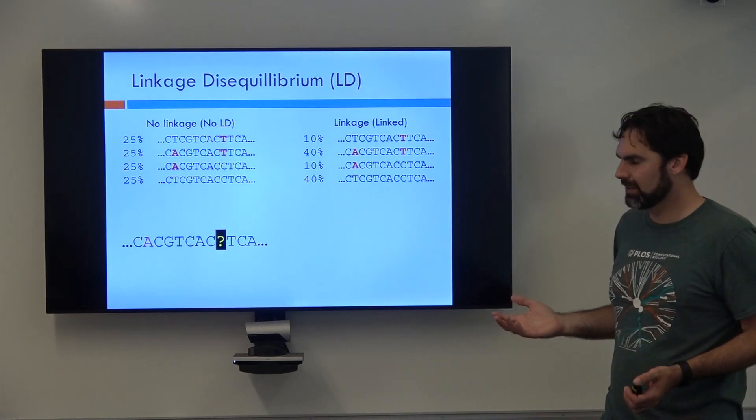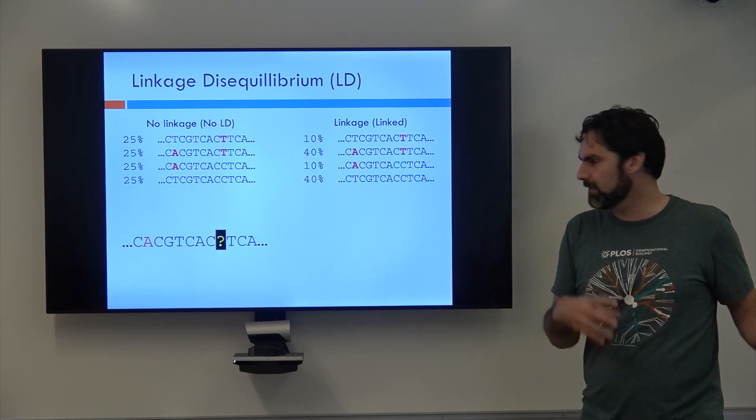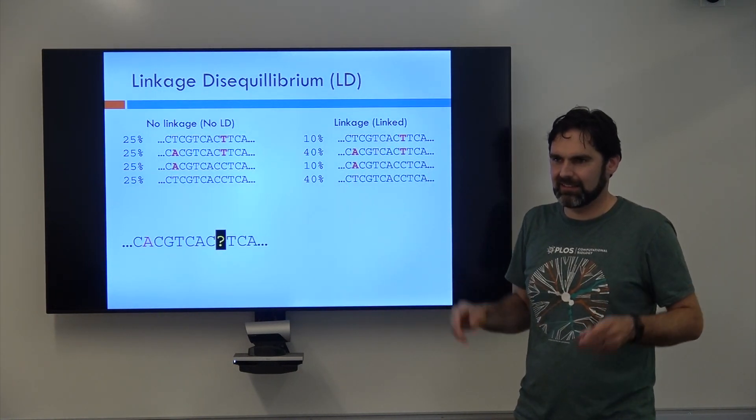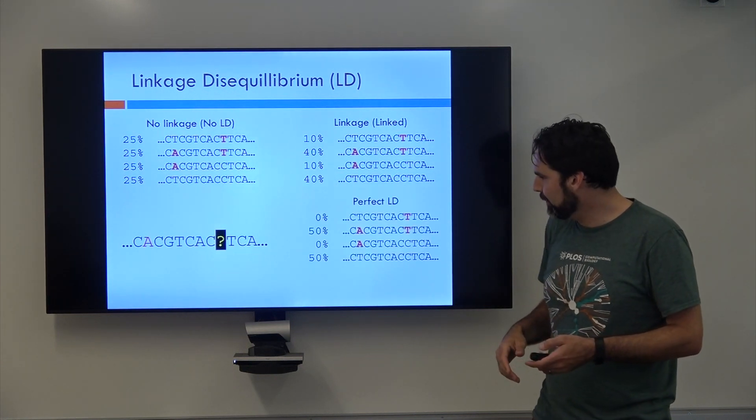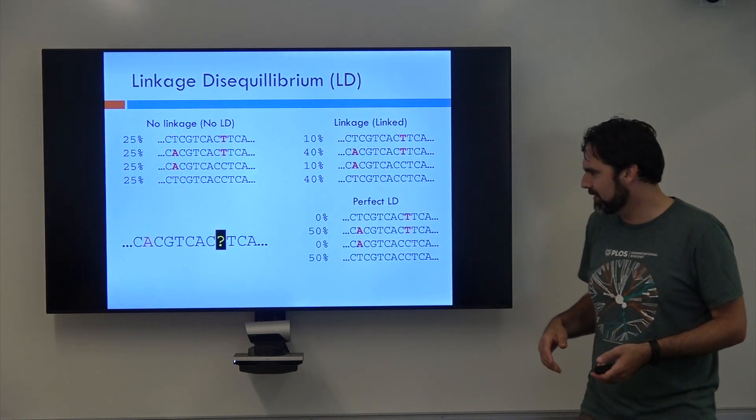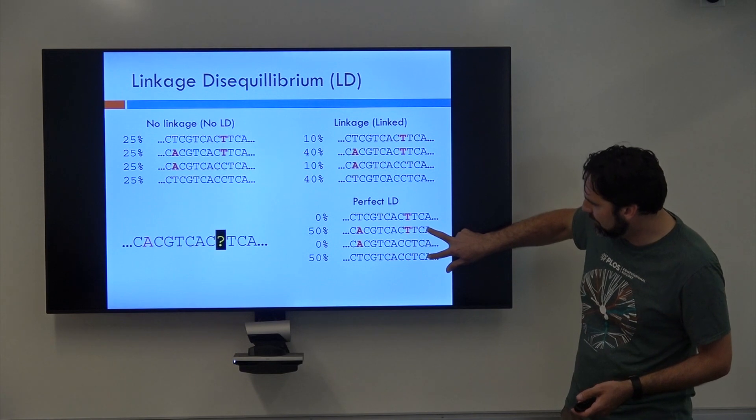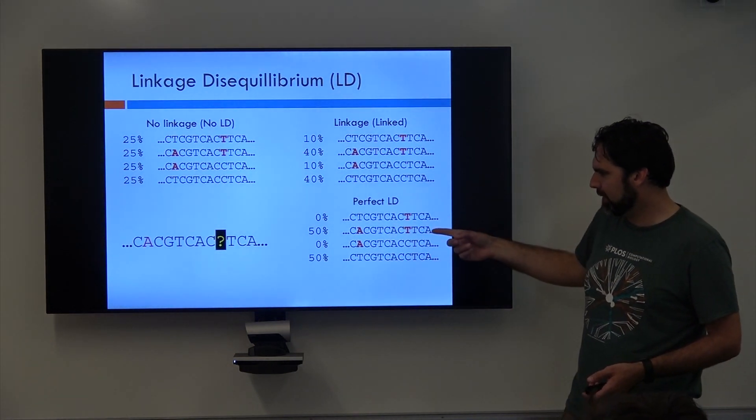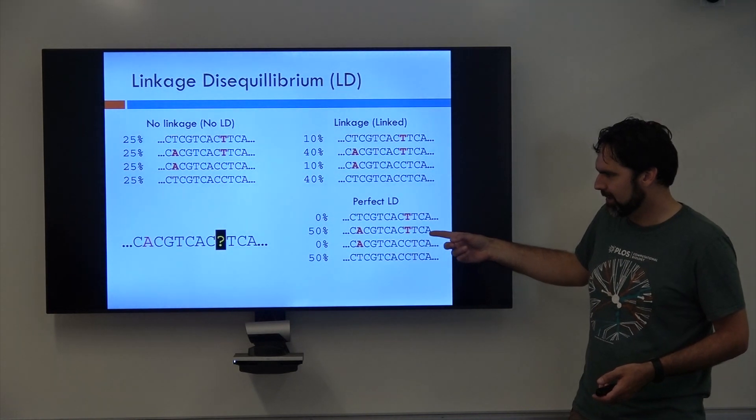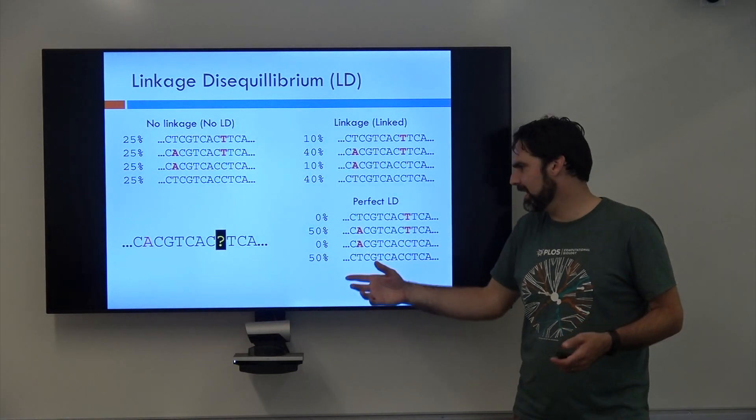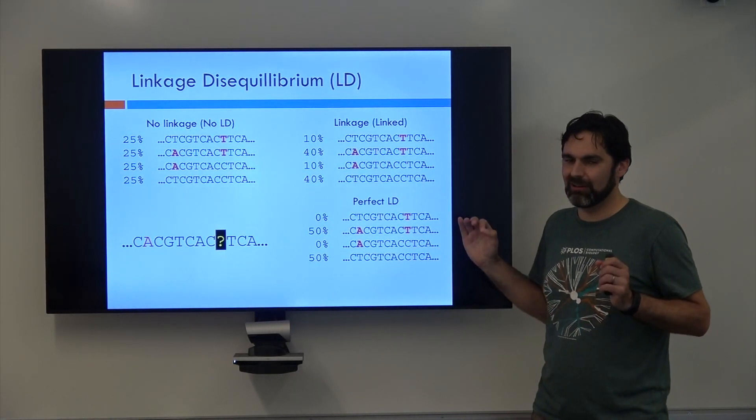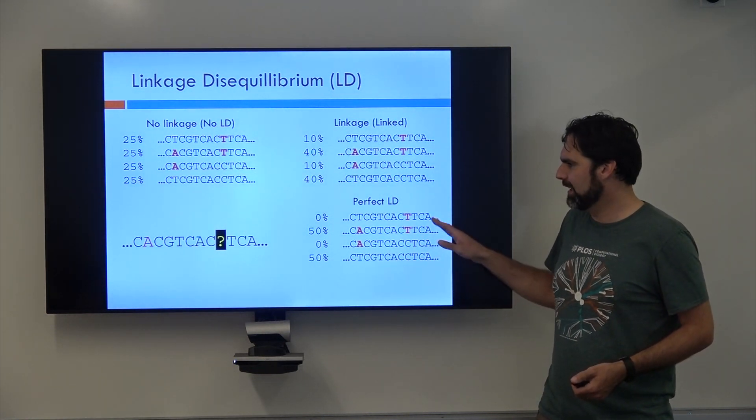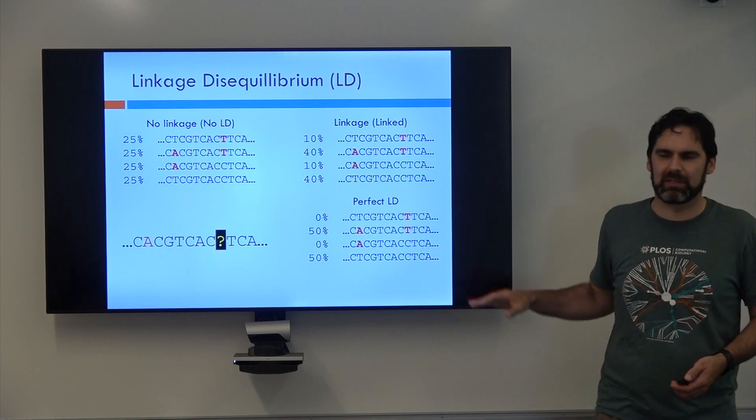It is an 80% chance that this is a T and only a 20% chance that this is a C. So in this case, knowing that A does give us information about what's at this different position, so we call this, we say they're linked. And now we also have this final option where here only these two haplotypes exist. And so now if I give you that haplotype, you see the A and you're like, well, they literally always occurs with the T. So everyone's like, okay, it's a T. And this is called perfect LD or perfect linkage.